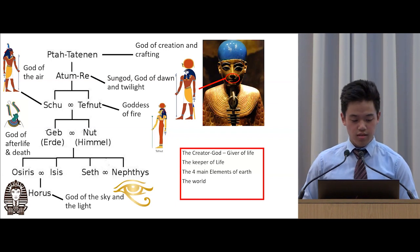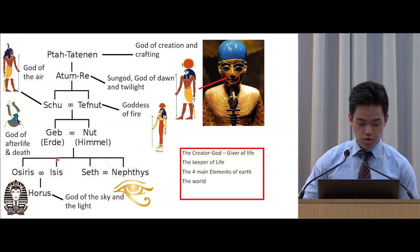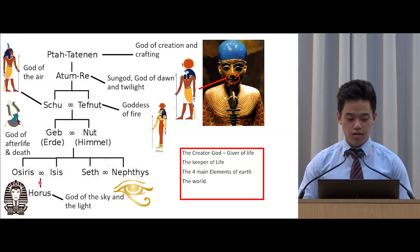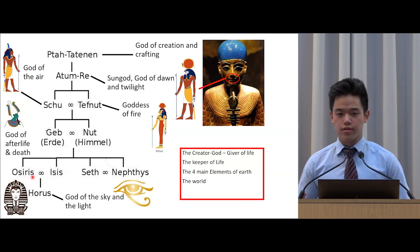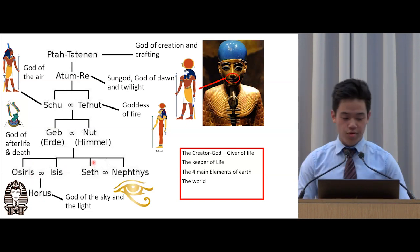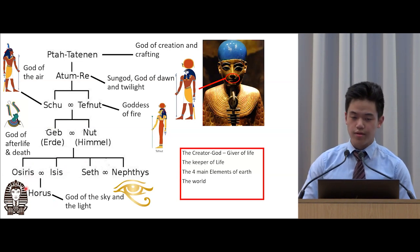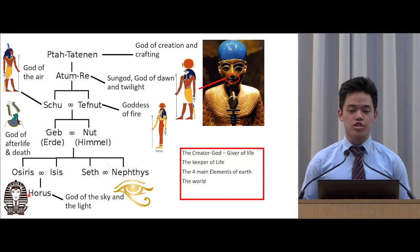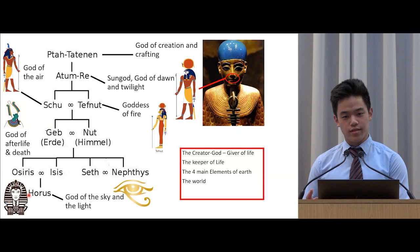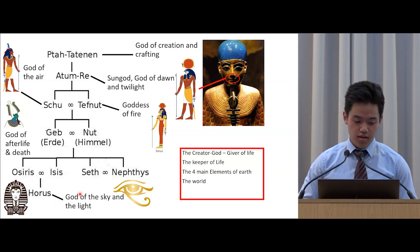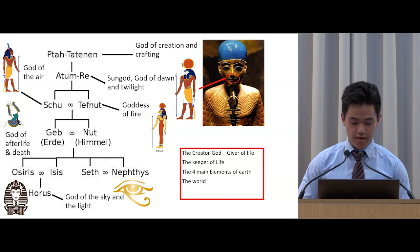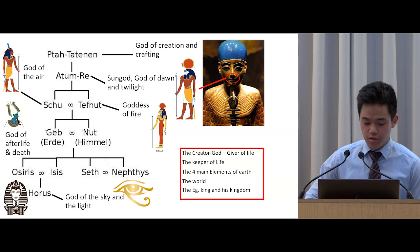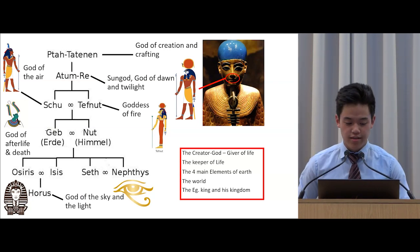Seth wanted to be king, but Osiris had been married to Isis, and Isis had a son from Osiris — Horus. Therefore Osiris' kingship was saved, and Seth could not become king. Horus, the descendant, became the king. This is the reason — as we will see later — why all Egyptian kings had Horus as one of their names. Horus was the god of sky and the god of light. In this way, the Egyptian king, from Osiris to Horus, and his kingdom were created.